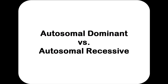Another important point about Mendelian disorders is that some are autosomal dominant while others are autosomal recessive. Cystic fibrosis is an example of autosomal recessive, meaning the disease allele is recessive. This is a good thing because if you have one healthy dominant allele, you will not have the disorder — you need both recessive alleles to have cystic fibrosis.